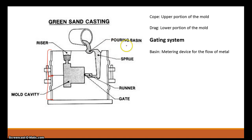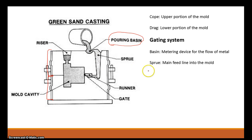The gating system is made up of a few things. First there is the pouring basin at the top, which is just a metering device for the flow of metal. The crucible or ladle is poured into the pouring basin, which fills up and meters the molten metal into the mold. The next component is the sprue — think of it as the main feed line into the mold. It comes from the pouring basin and goes down into the mold, where the liquid metal actually starts to enter.